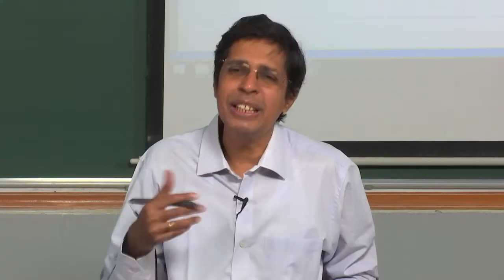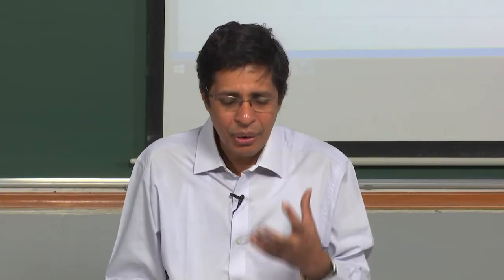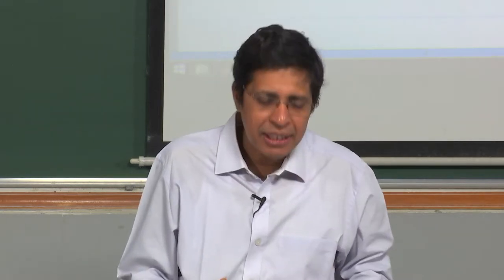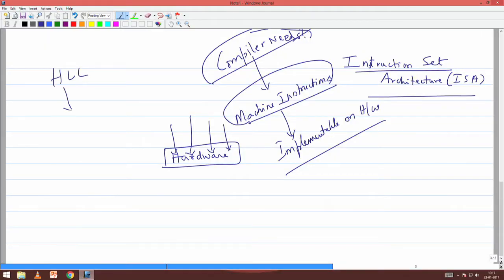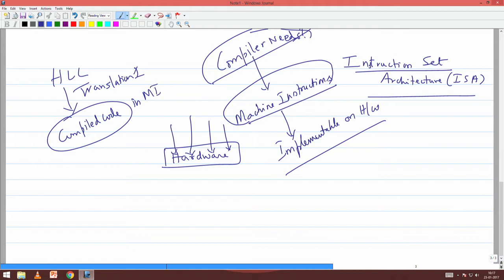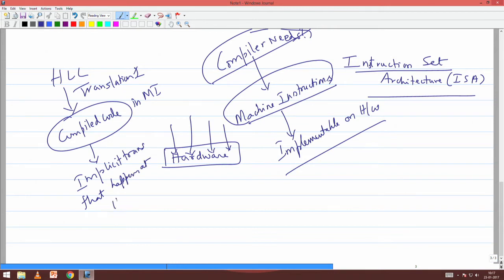What do you mean by implementable on hardware? It should be understandable to the hardware. The hardware actually interprets these instructions in some form. So, implicitly there are two translations that happen when you write a program. I have a high-level language. There is one level of translation — translation 1 — which gives you compiled code in machine instructions. This is an explicit translation where you can see the executable code encoded in machine language. Now these instructions are pushed one by one into the hardware, and the hardware interprets each of these instructions for execution. There is an implicit translation that happens at the hardware level.